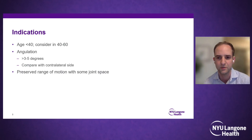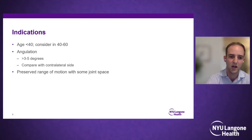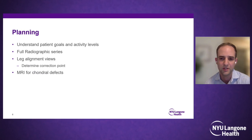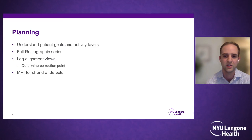Generally, the procedure is indicated in patients younger than 40, although it can be considered up to age 60. Mechanical axis deviation should be at least 3 to 5 degrees from the contralateral side, and a lack of motion or joint space would be a contraindication. History and imaging are crucial — we must understand patient goals and activity levels. A full radiographic series and weight-bearing leg alignment views are essential, and MRI is useful to assess chondral and meniscal pathology.